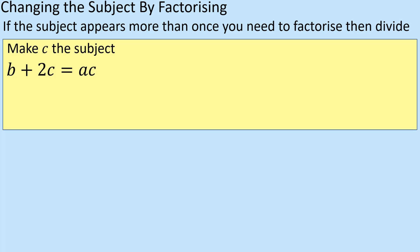So make C the subject. Hopefully you can see from there you've got B plus 2C equals AC. So I've got C in two different places. This is where I'm going to try and get them together and then ultimately factorise it to isolate it. So before I begin, I've got to rearrange this to get my 2C and my AC together on the same side.